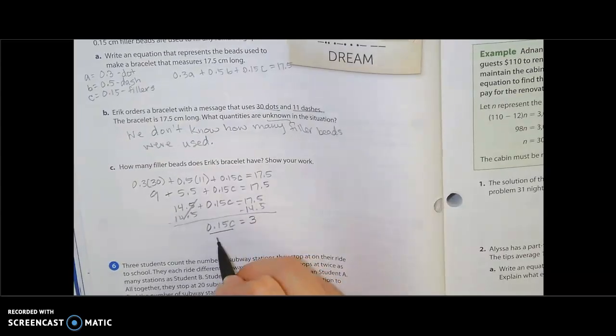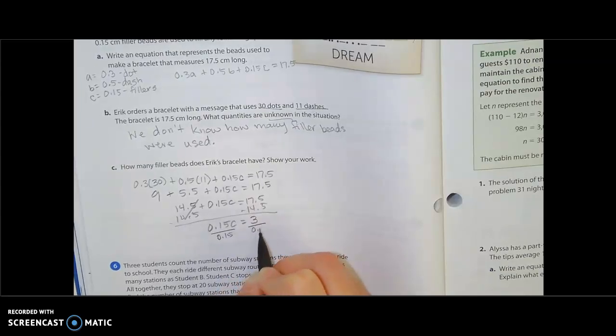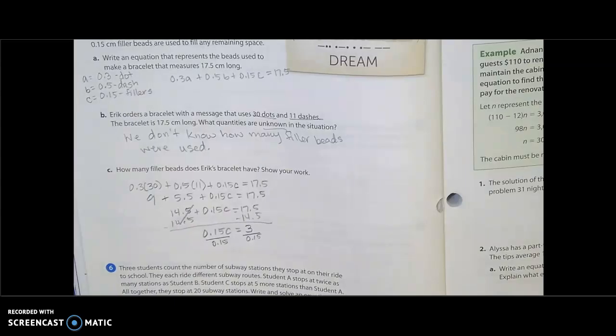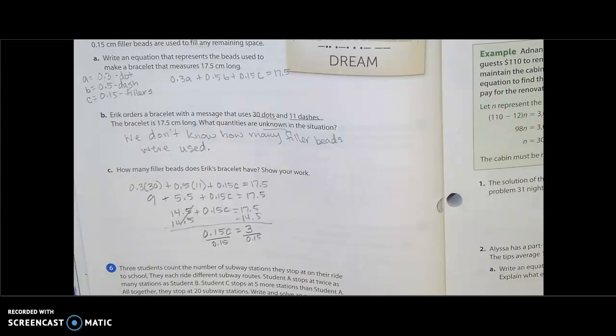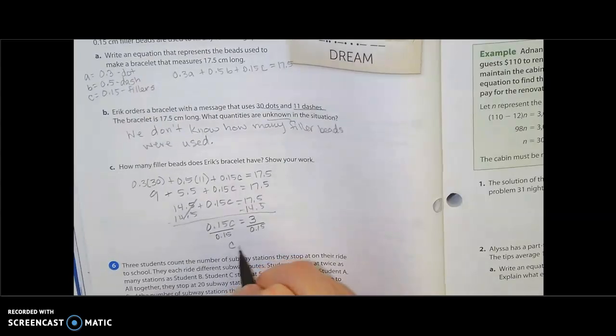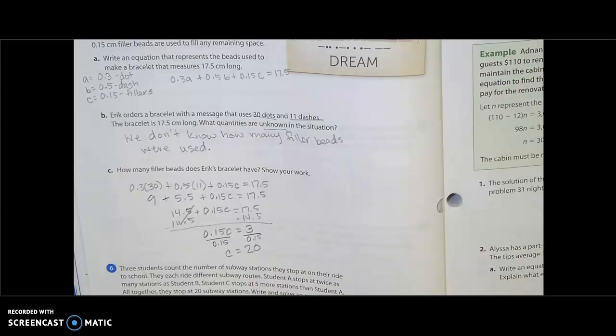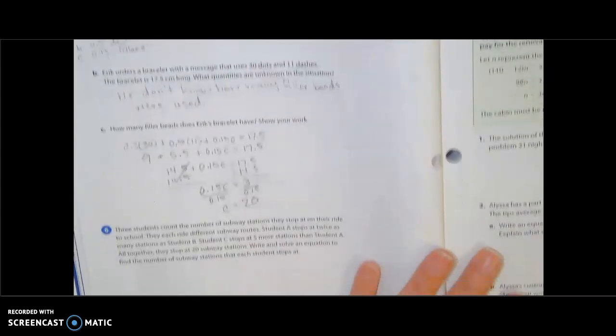And then I'm going to take that 3 centimeters and I'm going to divide by 0.15, and it's going to be a bigger number and it should be because we're trying to figure out how many 0.15's fit into 3. So 3 divided by 0.15 is 20. So there are 20 filler beads. And you can write that: there are 20 filler beads.